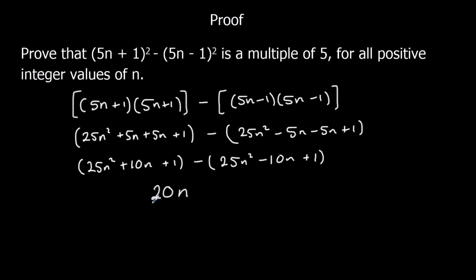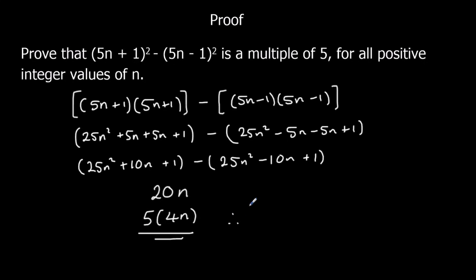So this simplifies to just 20n. We need to prove it's a multiple of 5. Well, what we can do is say it's 5 times 4n. So we've proved it by showing it's 5 times something. Therefore, it is a multiple of 5 for all positive integers. So we've proven it.